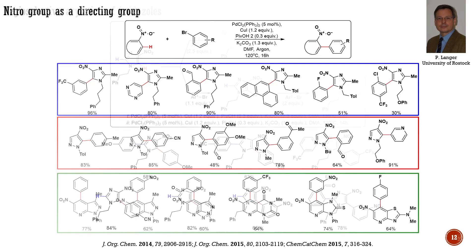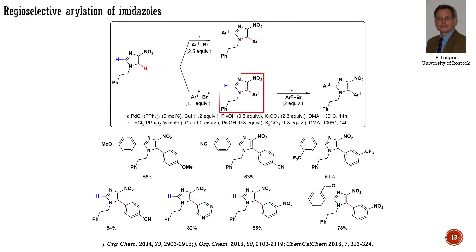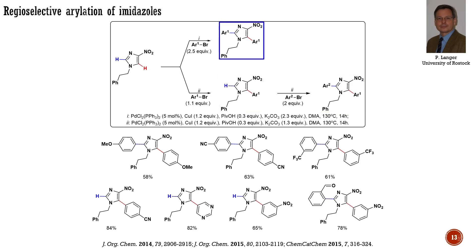For 2,5-unsubstituted imidazole, it was found that the reaction proceeds regioselectively towards arylation at the 5th position when using 1.1 equivalents of aryl halide. In this case, position 2 can be arylated by the addition of another aryl halide. When the arylating reagent is used in excess, the main product of the reaction is a diarylated imidazole. This is another example where the directing effect is more dominant than the inherent reactivity of the system.